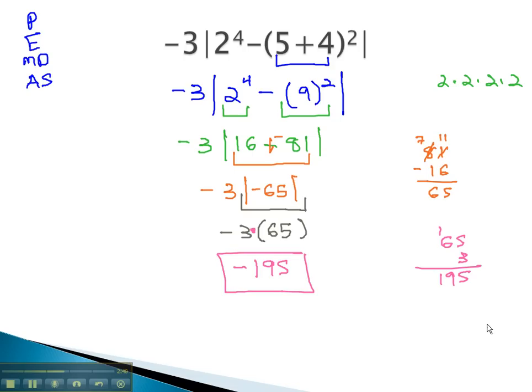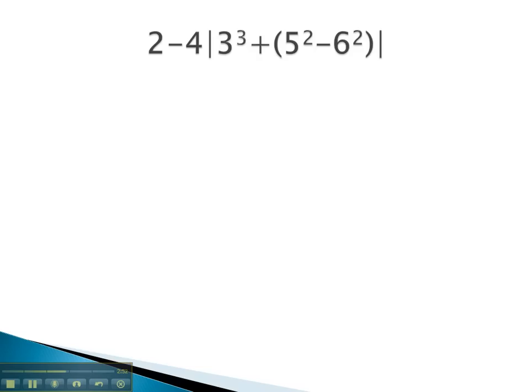Let's try one more example with an absolute value in it. Again, in this problem, following the same order of operations with PEMDAS, we'll start in the parentheses, and in the innermost parentheses, there are some exponents to take care of. This gives us 2 minus 4, absolute value of 3 cubed plus 5 squared is 25, minus 6 squared, or 6 times 6 is 36.